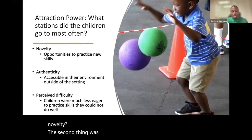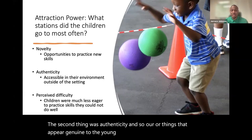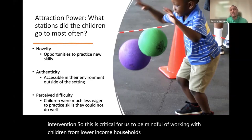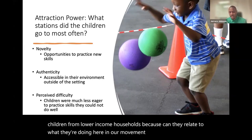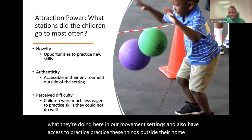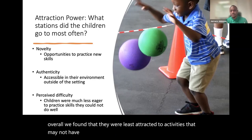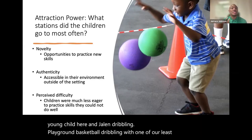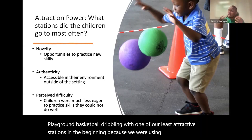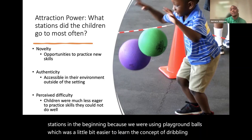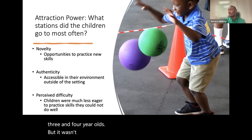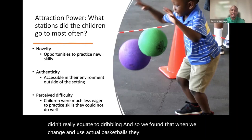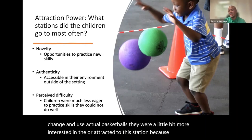Children were least attracted to activities that didn't appear authentic. Dribbling was one of our least attractive stations initially because we were using playground balls — it wasn't very authentic to them. When we switched to actual basketballs, they were more attracted because of authenticity, though they still weren't very good dribblers. The final attraction factor was perceived difficulty — children were much less eager to practice skills they could not do well or that they didn't perceive themselves as doing well, which was also the case for dribbling.